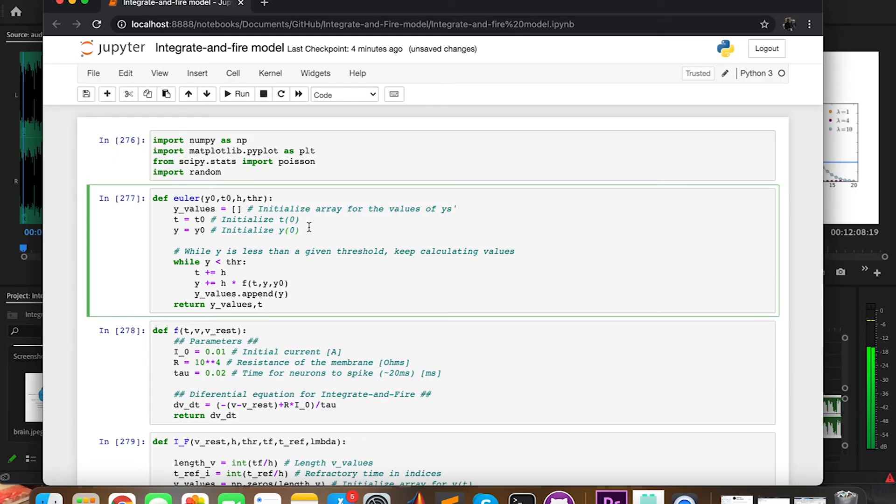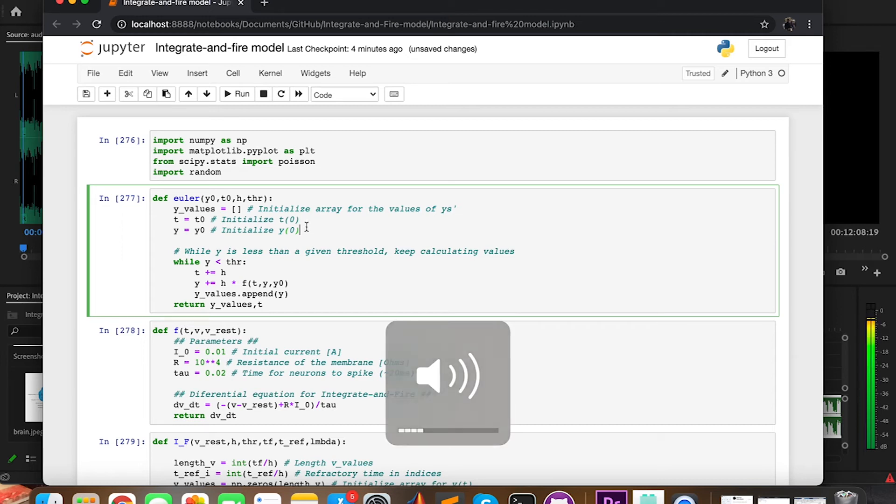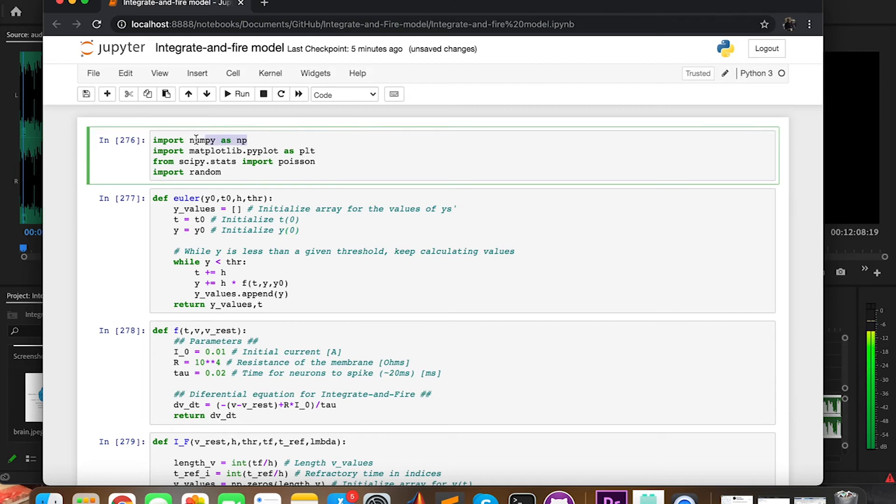As you can see, I'm using Jupyter Notebook for this project. What we first need to do is to import the libraries we're going to use. In my case, I'm using NumPy for the arrays, PyPlot for the plots, Poisson for the Poisson distribution, and Random to generate random numbers. We'll see all this in a minute.